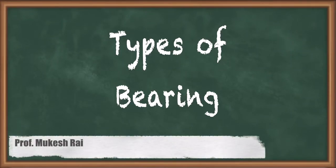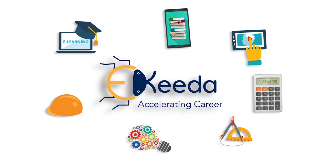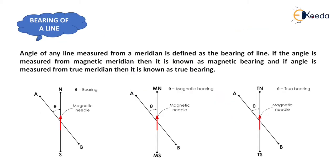Hello students, today we are going to study types of bearing. The angle of any line measured from a meridian is defined as the bearing of that line. If the angle is measured from a reference meridian — shown here as theta — then theta will be known as the bearing of line AB.